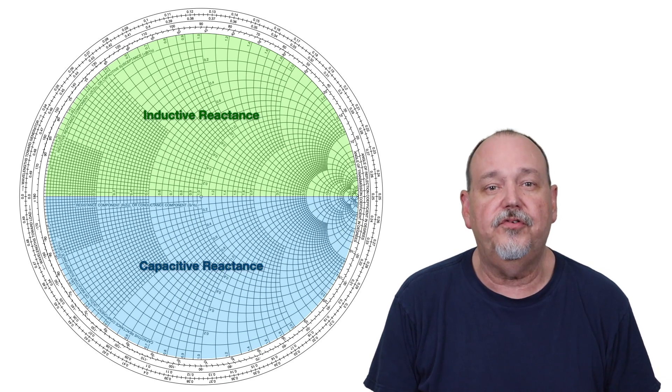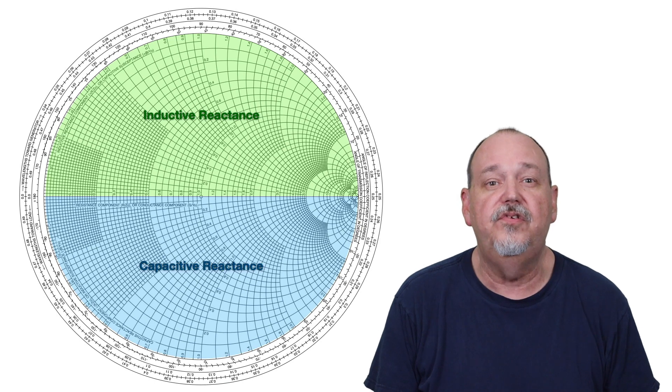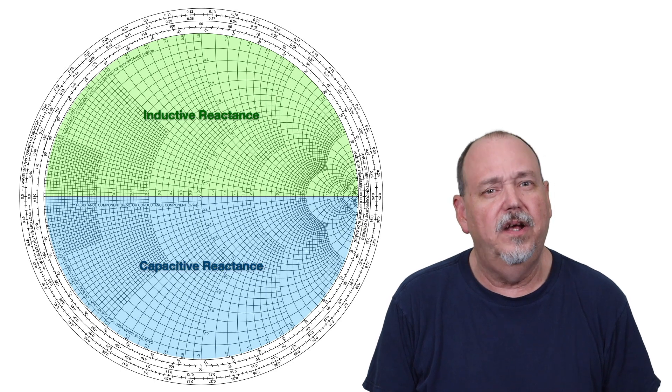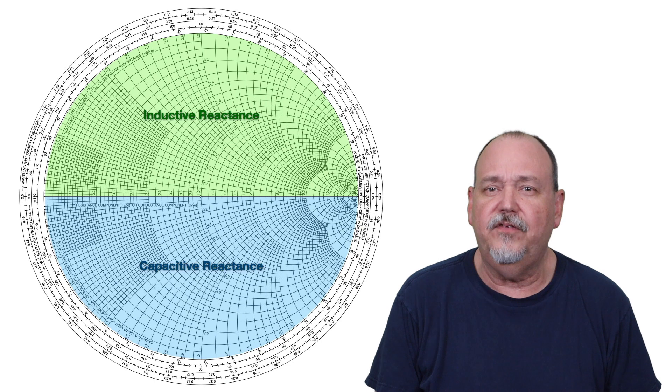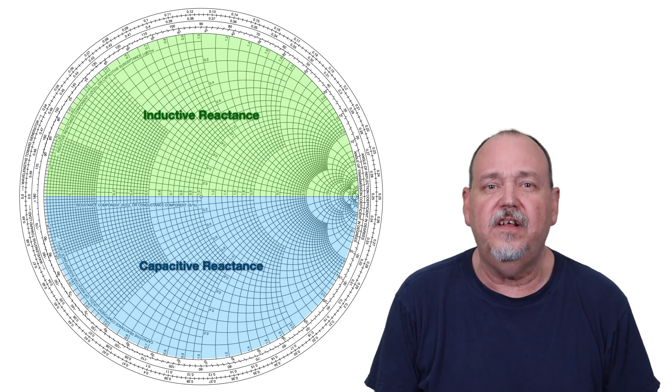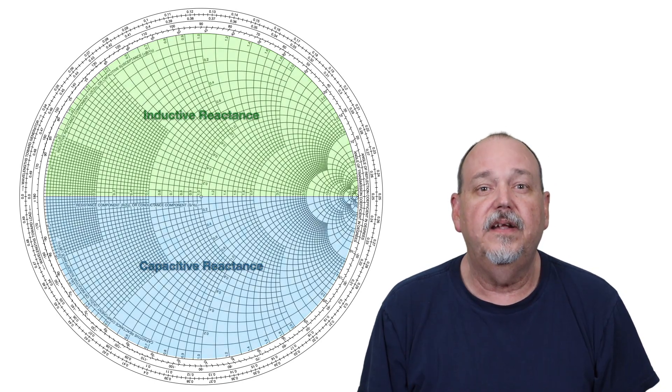Those numbers also get normalized or multiplied by our system impedance of 50 ohms. The line down the center is where there is zero inductive or capacitive reactance, or resonance. Notice that the SWR can be anything between 1 to 1 and infinite. And this is a good depiction on why resonance does not equal a 1 to 1 SWR.